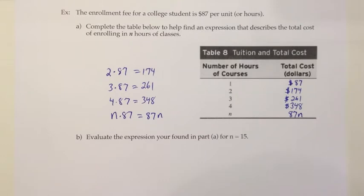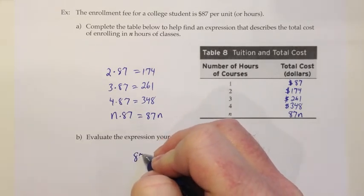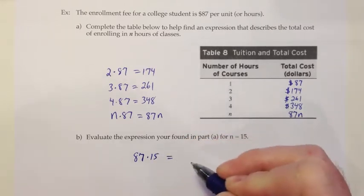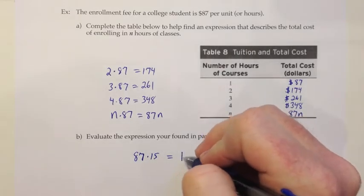Finally with this problem, they want us to evaluate the expression that we found for n equals 15. When we have an expression, we're kind of stuck. We can't go any further until somebody tells us what value of n we're going to be asked to evaluate that for. I couldn't simplify it or go any farther here, but now that they're telling me that n is equal to 15, I can plug that in.